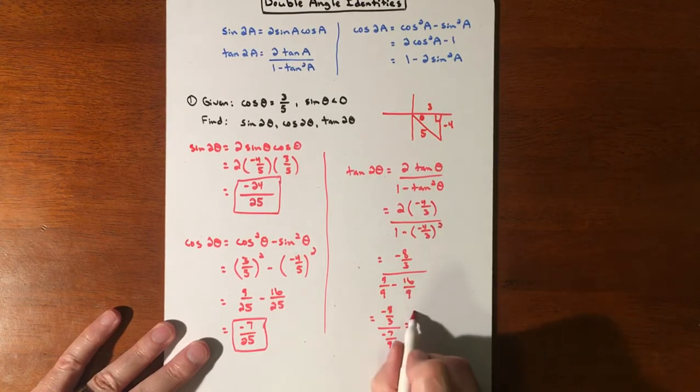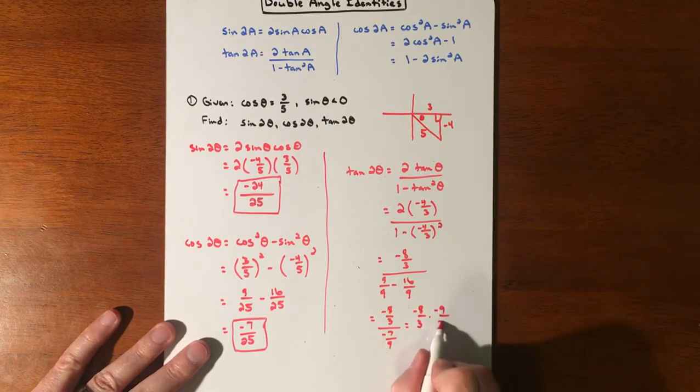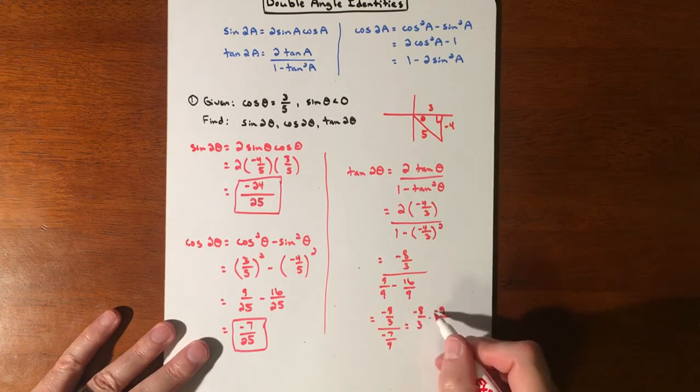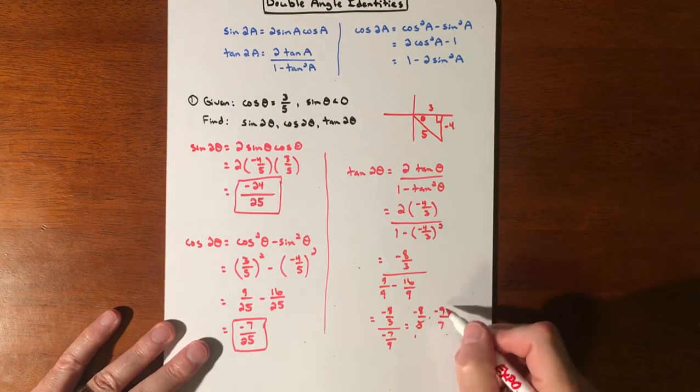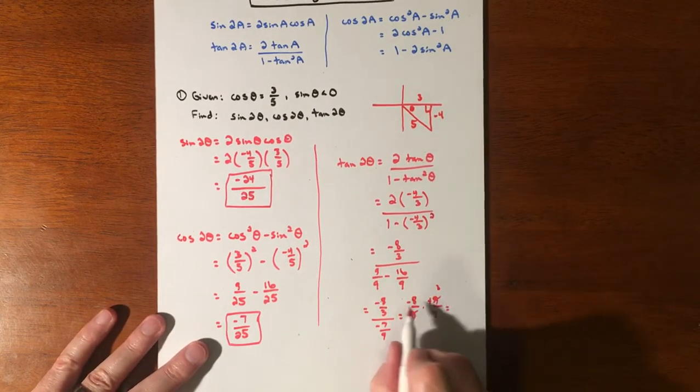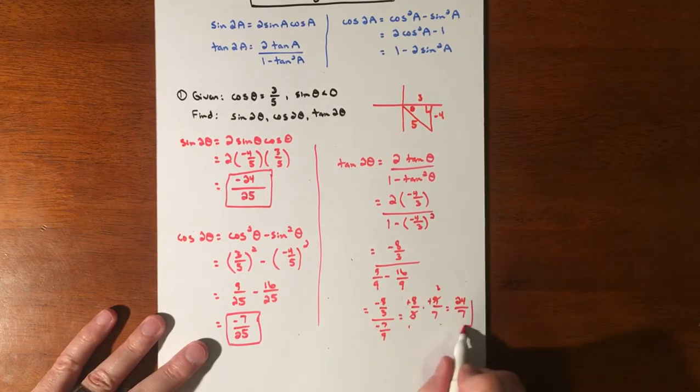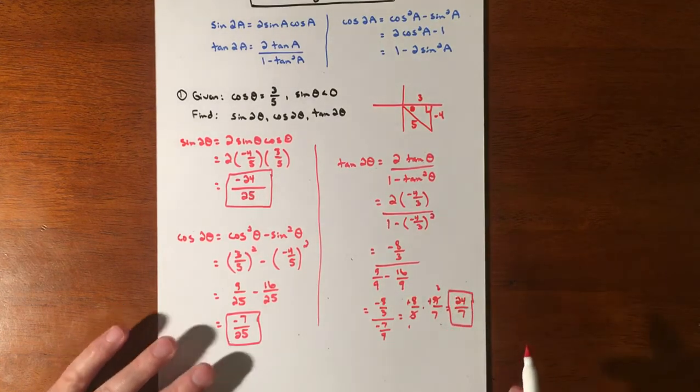I'm going to make the 1 into 9/9 so we can put those together. So we have -8/3 and 9 minus 16 is -7/9. We're going to multiply by the reciprocal: -8/3 times -9/7. The negatives cancel, the 3 and 9 can simplify, so we get positive 24/7.